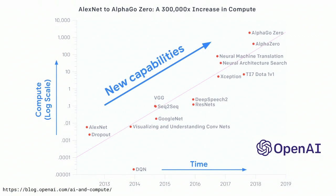To begin with, I wanted to start with a little bit of motivation. Why TPUs? This is a chart that I'm really quite fond of. It was recently published by OpenAI on their AI blog. It traces over the last six years a number of seminal advancements that have happened in the field of deep learning.